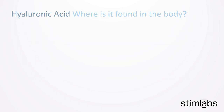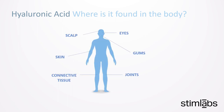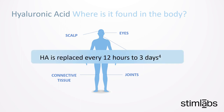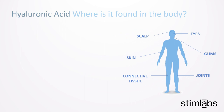But where is it found in the body? Well, HA is a key component of the extracellular matrix and is synthesized at the cell surface membrane throughout the body. It can be found in the space between your cells, providing a protective coating to surround and protect those cells. The turnover rate of hyaluronic acid in the extracellular matrix is very high, being replaced every 12 hours to 3 days. HA organizes into large matrices of proteoglycans to create a hydrated matrix around cells and tissue throughout the body.